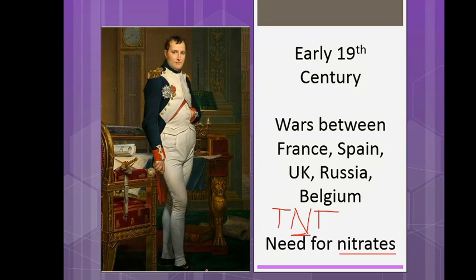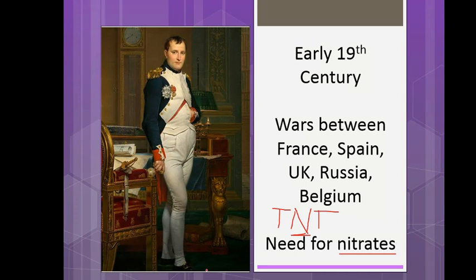There was a huge push on an industrial level to get more nitrates. As you may know from GCSE, nitrates are also very important for fertilizers. But this was before the Haber process — nitrogen was not very easy to obtain at all. So what Napoleon and some other governments did was put out a call to scientists, saying they needed to get these nitrates somehow.